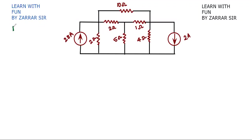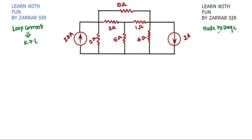If you want to find the loop current, we usually use KVL, and if you want to find node voltages, we use KCL. You can also apply KCL while finding loop current, but it depends on the problem.